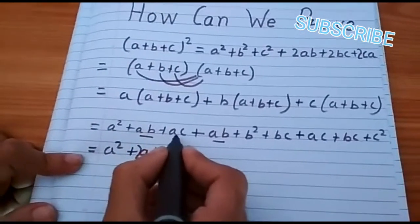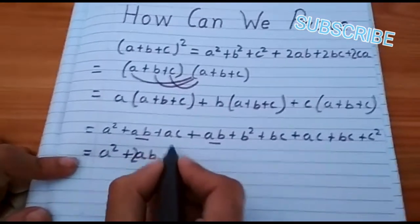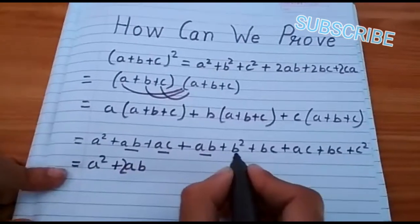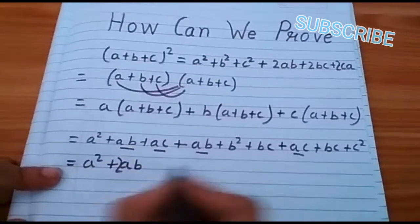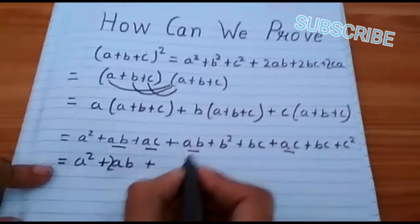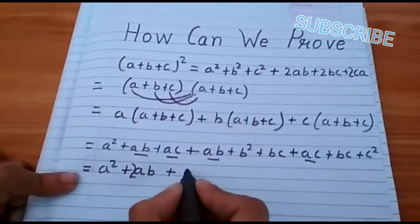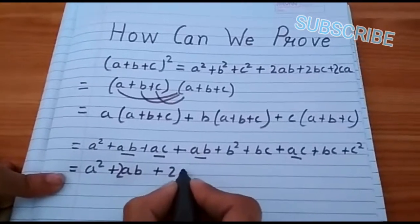Then how many ac is there. One ac and two ac. So, we sum both of them and is equal to 2ac.